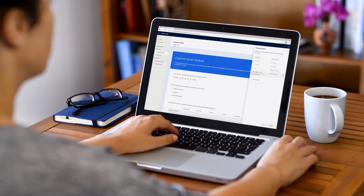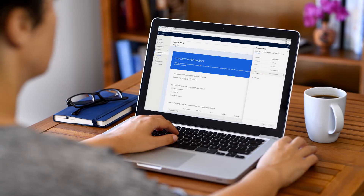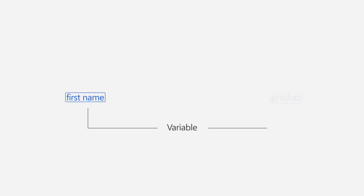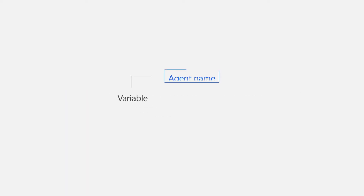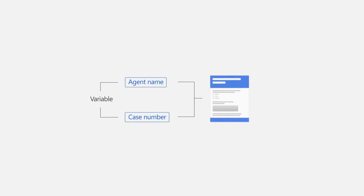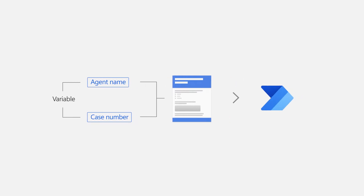Variables allow you to personalize a survey by automatically inserting custom information in it. For example, you can use a variable to automatically insert a customer's first name and product name into a question to personalize it. For this example, we'll create two variables: agent name and case number. We'll then personalize the survey and email it by using these variables. When you send this survey through Power Automate, variables will be replaced dynamically with appropriate values.